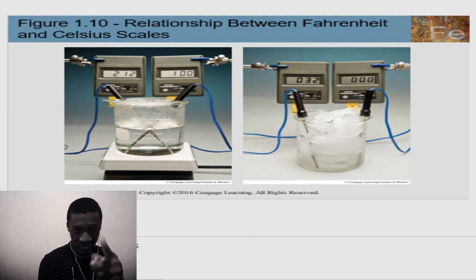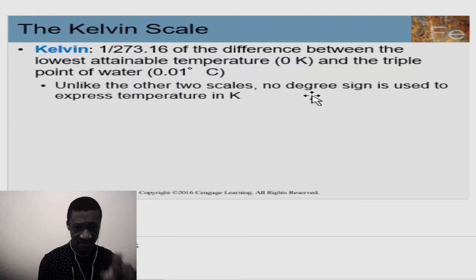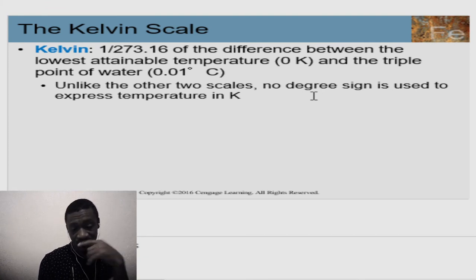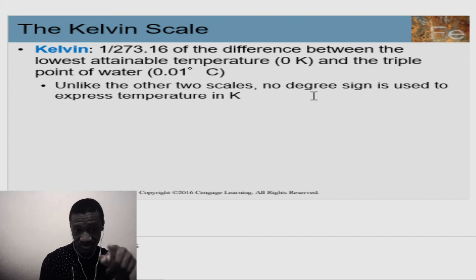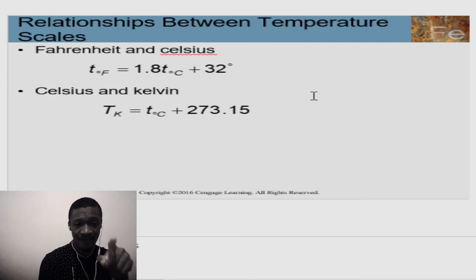The Kelvin scale doesn't have a degree symbol — it's expressed just as K. The difference between the lowest attainable temperature and the triple point of water is 273.16. To convert Celsius to Kelvin, you add 273.15 to the Celsius value. Degrees Celsius is the bridge: if you have Celsius you can find Fahrenheit; if you have Celsius you can find Kelvin. If you only have Fahrenheit and need Kelvin, you must first convert to Celsius.